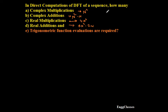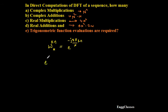If we consider the twiddle factor W_N to the power kn, this twiddle factor is equal to e to the power minus j times 2π divided by N, multiplied with k times n. We also know that e to the power minus jθ can be expressed as cosθ minus j sinθ.